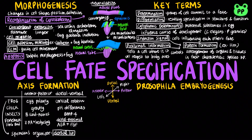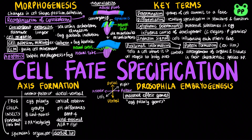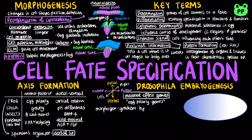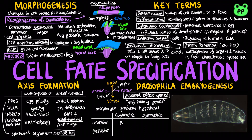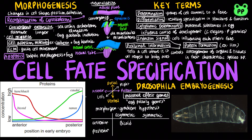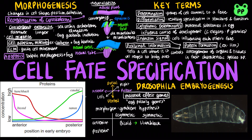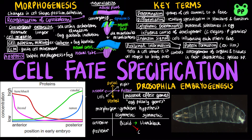Drosophila or fruit fly embryogenesis is regulated by two groups of genes. The maternal effect genes, also known as egg polarity genes, control the orientation of the egg. The morphogen gradient hypothesis states that gradient substances known as morphogens establish an embryo's axes. In the Drosophila embryo, asymmetric distribution of bicoid at the anterior end activates hunchback at the anterior while repressing caudal at the anterior, whereas the morphogen nanos is asymmetrically distributed at the posterior end and along with pumilio represses hunchback at the posterior.